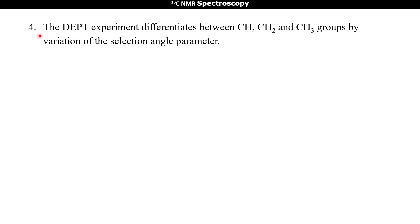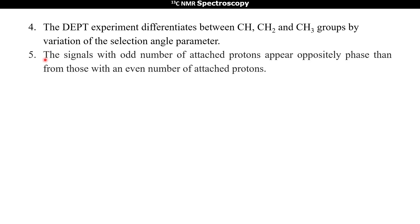The proton pulse is set at 45 degrees, 90 degrees, or 135 degrees in three separate experiments. The signals with an odd number of attached protons appear in opposite phase to those with an even number of attached protons — that is, carbons carrying an odd number of protons and carbons carrying an even number of protons appear in opposite phase.